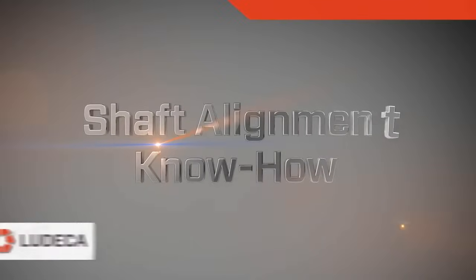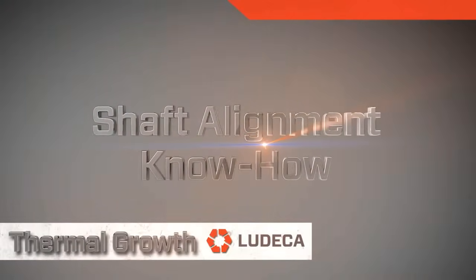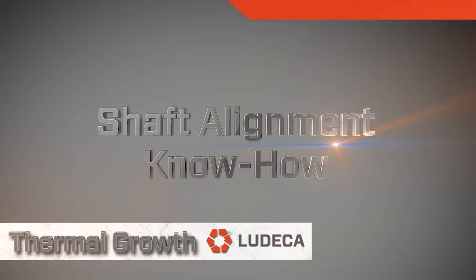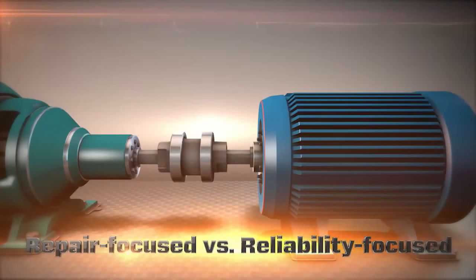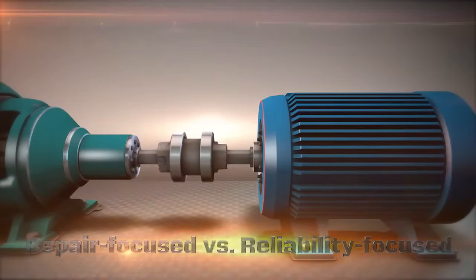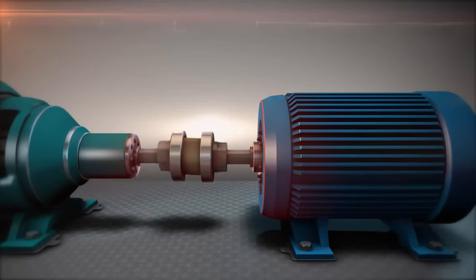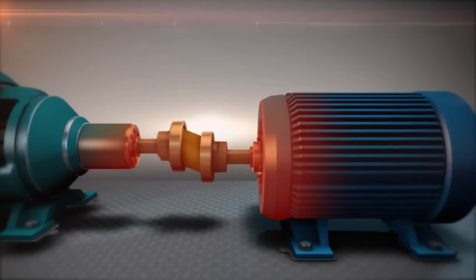Shaft alignment know-how: Thermal growth. Positional change. Not accounting for positional change in rotating machinery is a big reason why maintenance departments stay reactive instead of proactive. When rotating equipment runs, it heats up and undergoes positional changes.